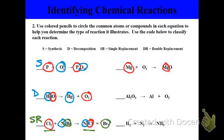We see Mg plus O yields MgO. That's another synthesis reaction. In our next, we have Al, or aluminum, plus oxygen, resulting in aluminum oxide.